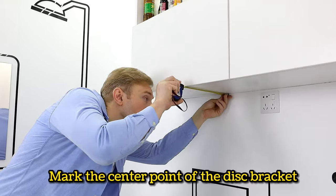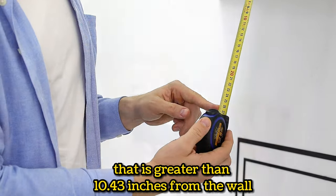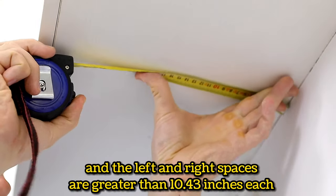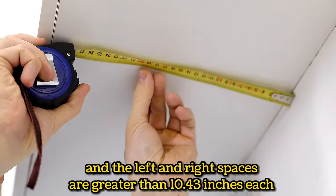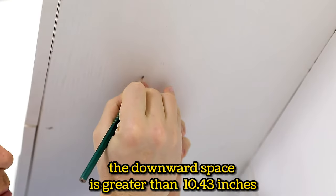Mark the center point of the disk bracket that is greater than 10.43 inches from the wall, and the left and right spaces are greater than 10.43 inches each. The downward space is greater than 10.43 inches.